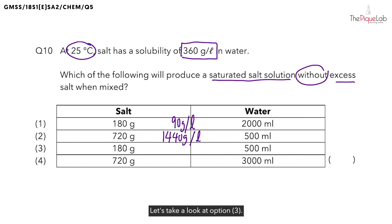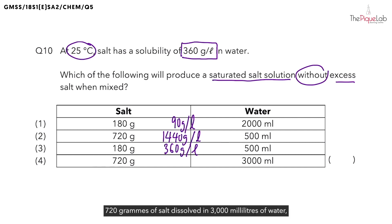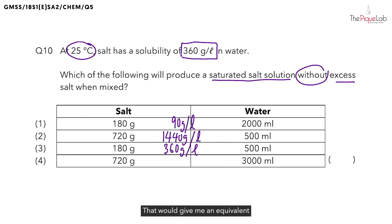Let's take a look at option three. Again, we have 500 ml of water. I have to multiply both values by two, giving me 360 grams per litre. Let's take a look at option four. 720 grams of salt dissolved in 3000 millilitres of water, which is equivalent to 3 litres of water. That would give me an equivalent of 240 grams per litre of water.